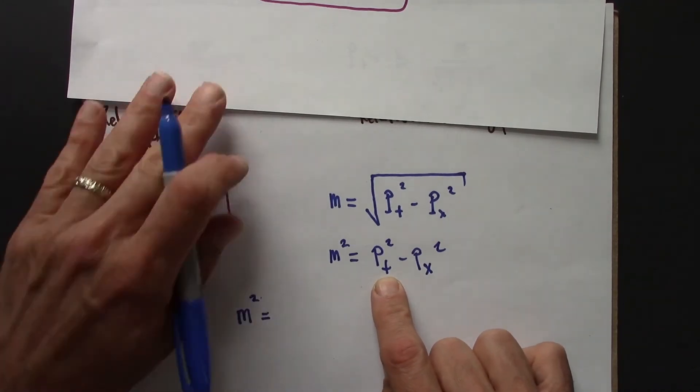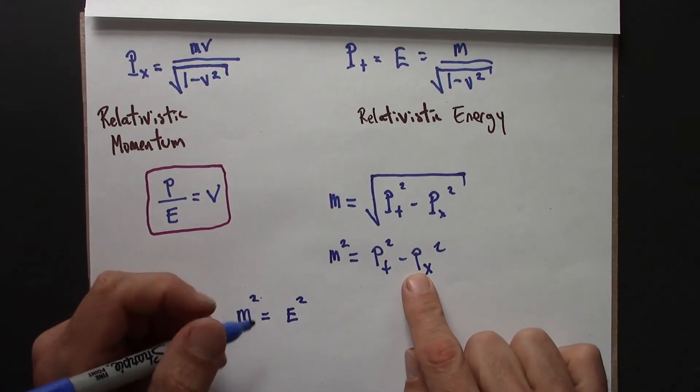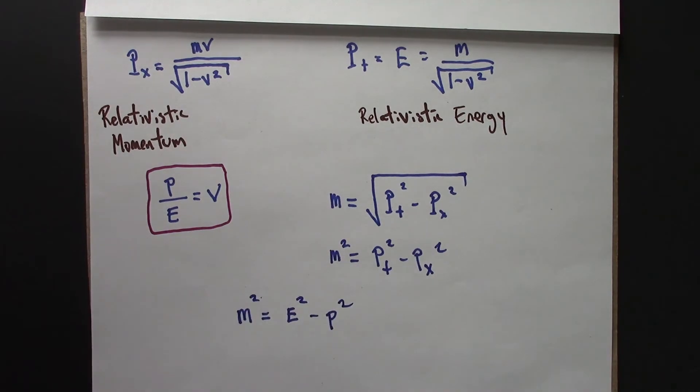p squared, pt squared is e, that's e squared. And px squared is just the momentum, if we're dealing in one dimension.